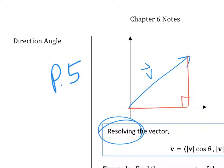Now, every vector has two things. What are those two things? Kind of, but it has a different name in the vector world. Magnitude and direction — yes, very good. Magnitude and direction. Every vector has two things: magnitude and direction.